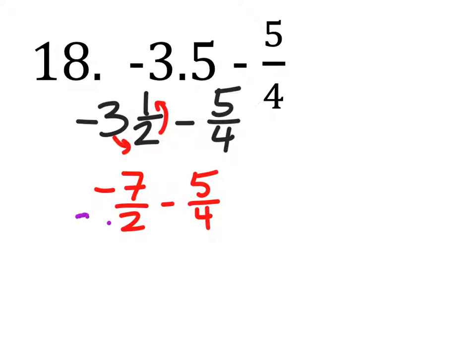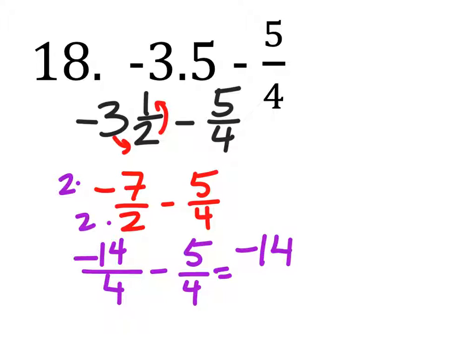And we need common denominators, so we'll multiply these by 2. Negative 14 fourths minus 5 fourths equals negative 14 minus 5 fourths. Negative 14 minus 5 is negative 19 fourths.